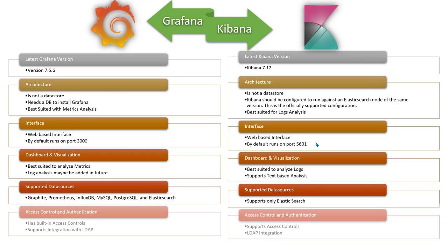Both Grafana and Kibana are very powerful when it comes to access control and authentication. Both tools give you the ability to create users, create roles, create groups, and provide specific capabilities or access to certain dashboards. All of these features are available in both tools, and both can be integrated with LDAP, which is a very powerful feature.